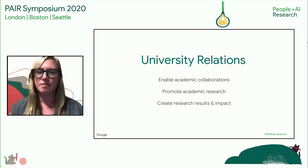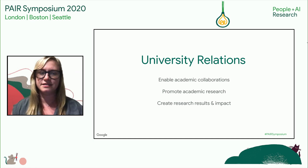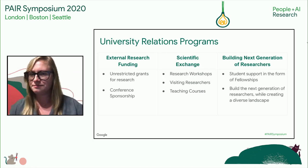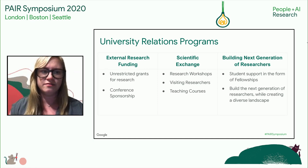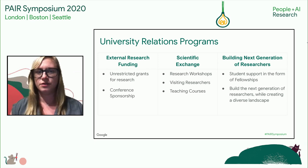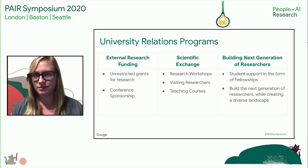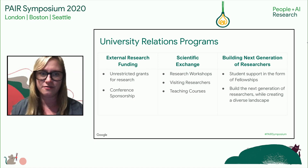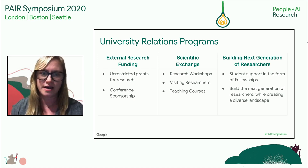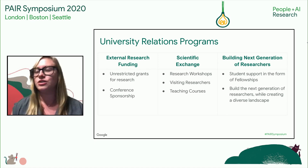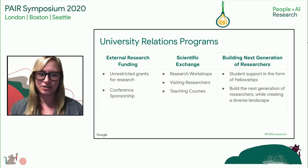This symposium and all the research you do is a great example of that. Some of the results include papers, open source codes, data sets, and support for all researchers across Google. We have a variety of different programs across University Relations which offer a lot of bilateral directional flow, everything from scientific exchange to building the next generation of researchers, leading to the great outcomes I previously mentioned.